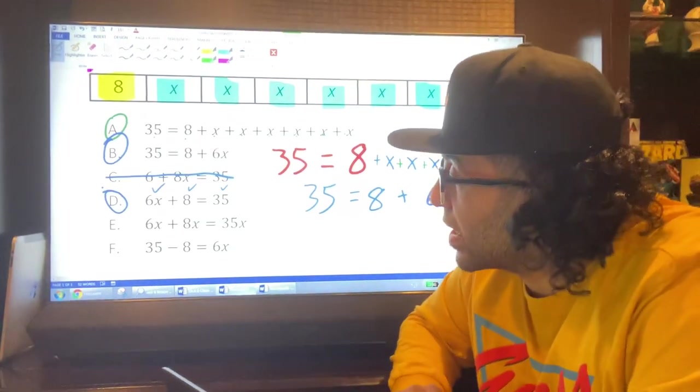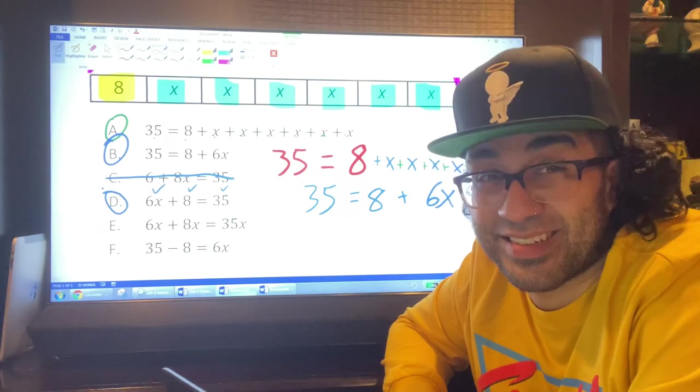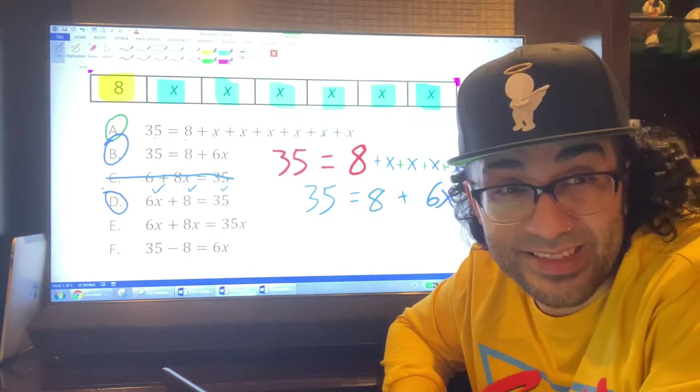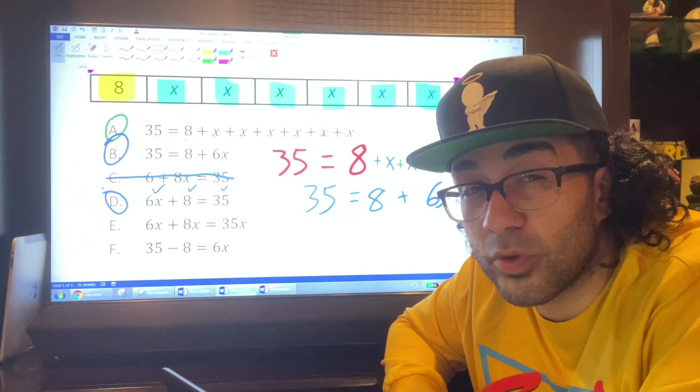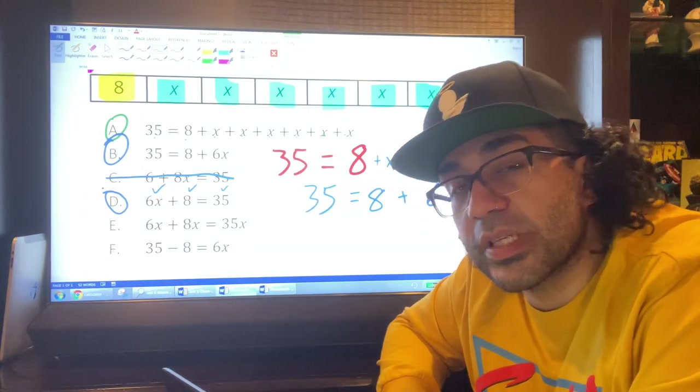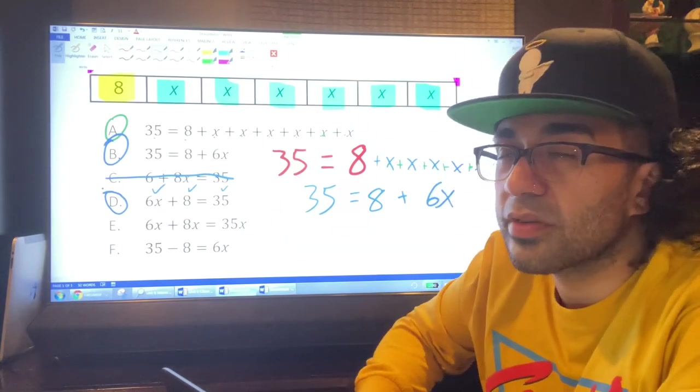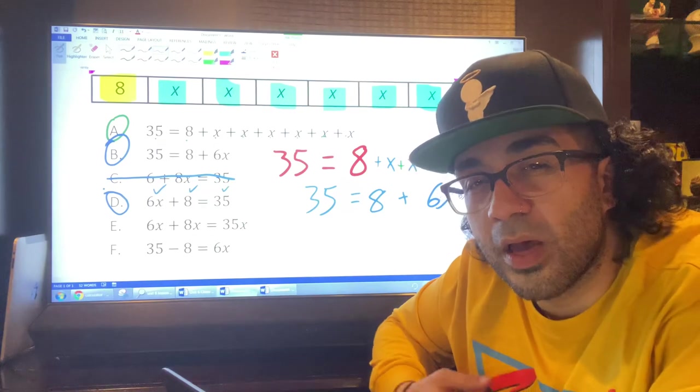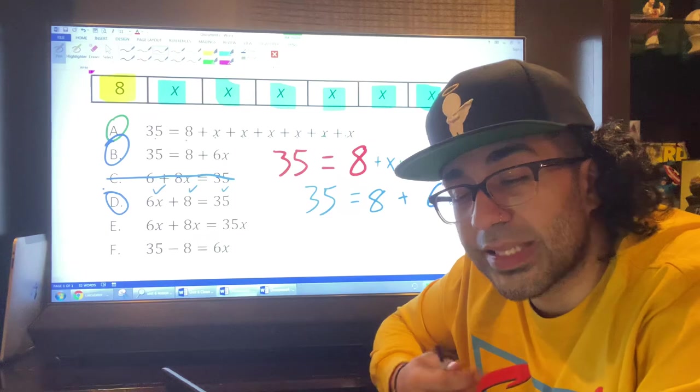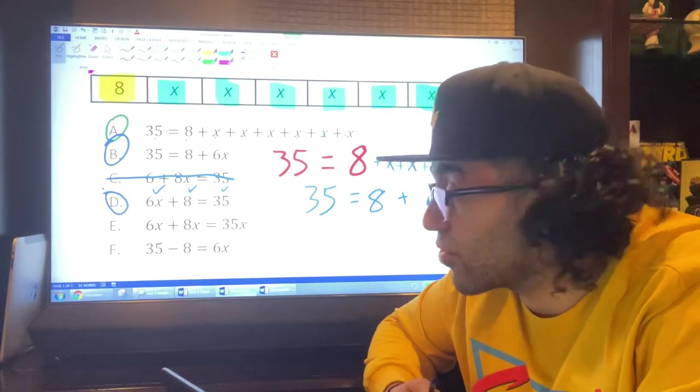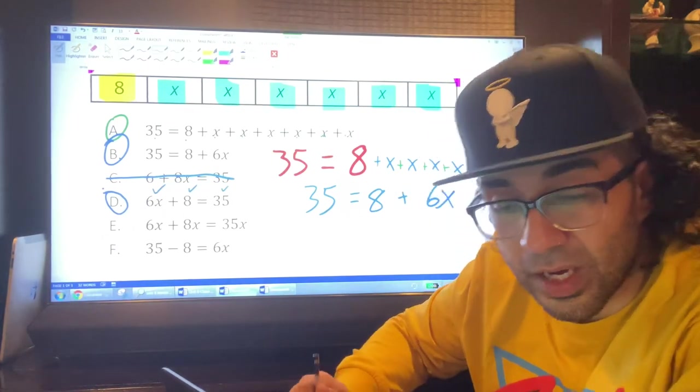E: 6X plus 8X equals 35X. That's a lot of X. That's too much X. It's only 6X when we started. 6X plus 8X equals 14X. And then 14X equals 35X. We can get into a lot of different, more complicated information about that. But if we want to keep it to the question, that does not match the tape diagram. The tape diagram only shows X six times, not 14 times, not 11 times, just six times. So E doesn't work.